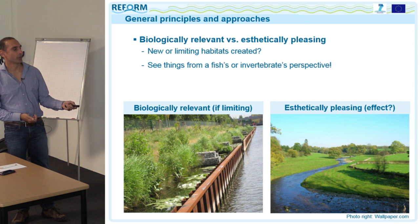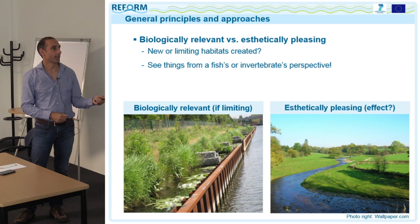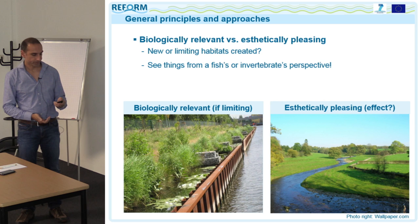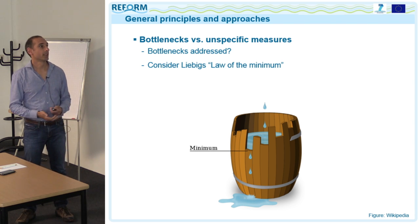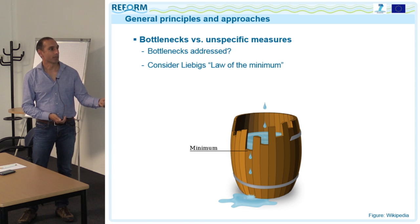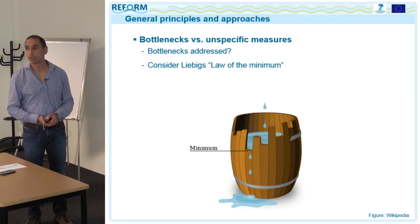On the left is a photo already shown by Christian Walter. It doesn't look very nice, but if this is the limiting habitat, it can be very effective. The idea was to provide shallow wave-protected areas for juvenile fish. This connects to the last principle: you should identify the bottleneck and address it rather than applying unspecific measures that simply increase habitat diversity — Liebig's law of the minimum is a good picture for this idea.